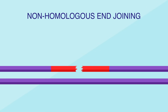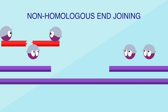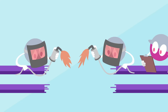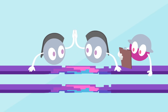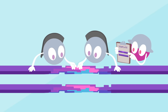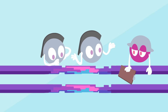Non-homologous end-joining, on the other hand, doesn't rely on a template. Instead, a series of proteins trims off a few nucleotides and then fuses the broken ends back together. This process isn't as accurate — it can cause genes to get mixed up or moved around. But it's useful when sister DNA isn't available.